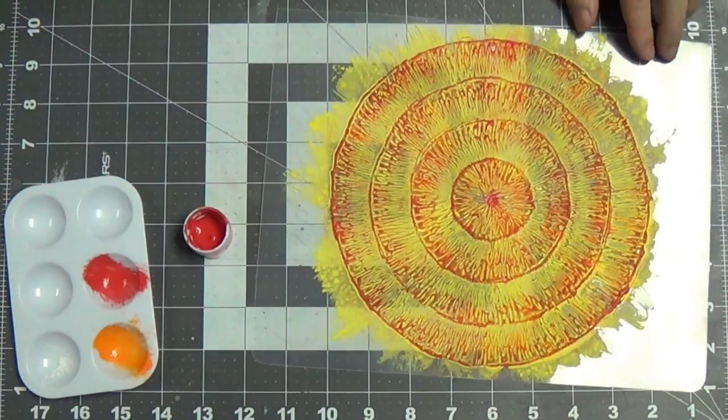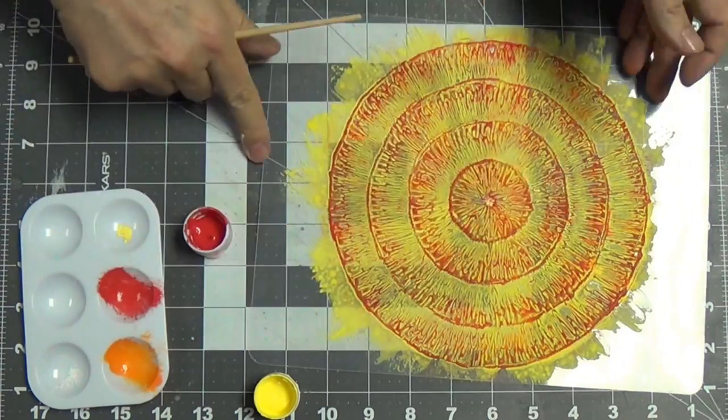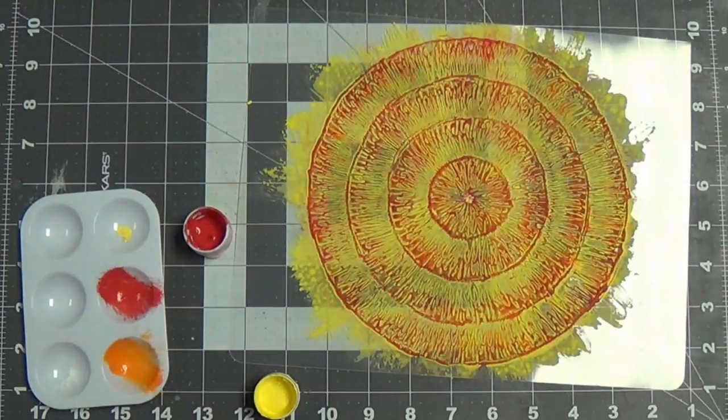Now I'm going to do a little red dot in the center to mark where the exact center is, and I'll put a little yellow in there just to make it interesting. There we go, the point of origin.